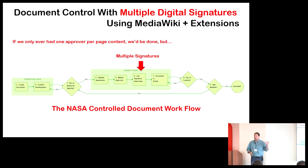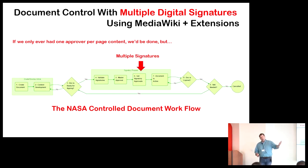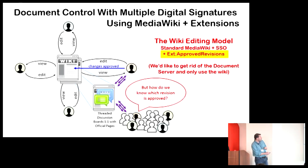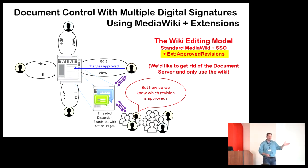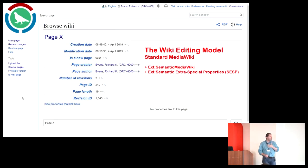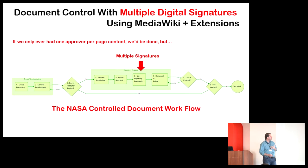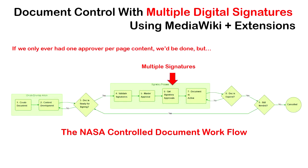When developing a document, there's almost always a signatory page at the front with buy-in from managers, safety folks, and technical experts. In this model, the four developers of the document would be the signatories — it's not enough that one person approves the page. We need a way to keep track of who the approvers are. So we create the document, do the development, and ask: is it ready for signing?